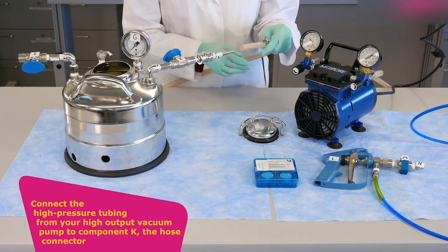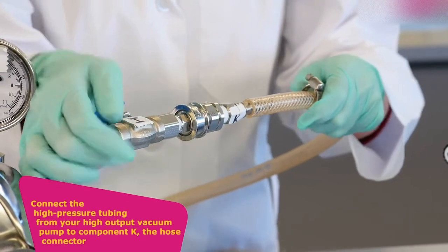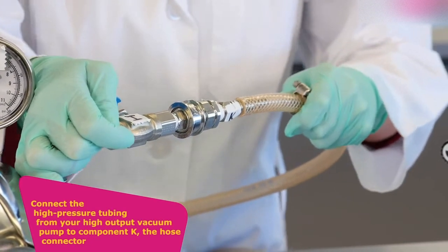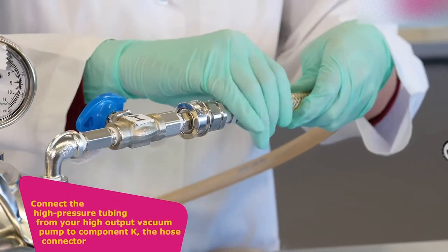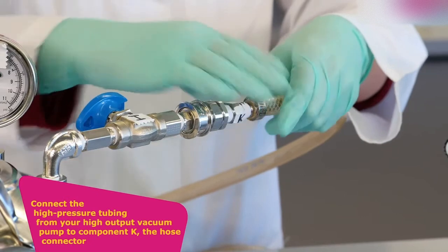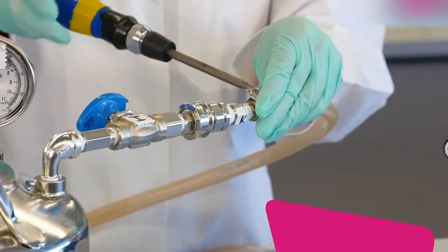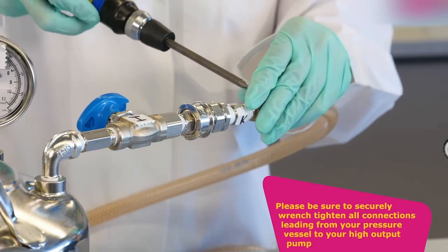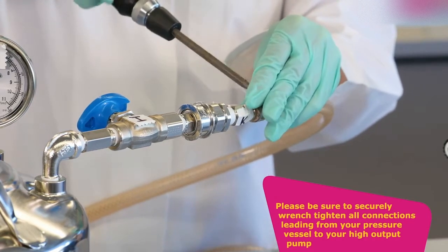Connect the high pressure tubing from your high output vacuum pump to component K, the hose connector. Please be sure to securely wrench tighten all connections leading from your pressure vessel to your high output pump.